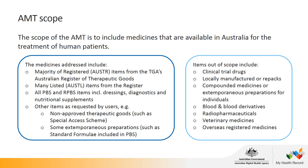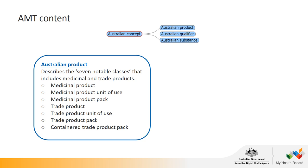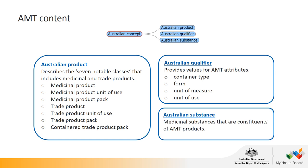Items that are out of scope are generally items only applicable to individual patients or settings, or not considered medicines, or not used for human patients in Australia. The AMT contains several groups of concepts: Australian product concepts such as medicinal product, medicinal product unit of use, medicinal product pack, and their equivalent trade concepts. These seven concepts are the notable product concepts that form the basis of the AMT model. We also have Australian qualifier concepts including container type, form, unit of measure and unit of use, and finally Australian substance or medicinal substance, which highlights the active ingredient contained in products.